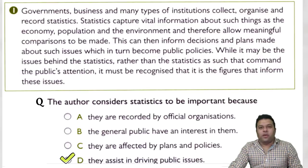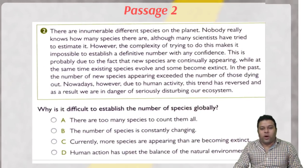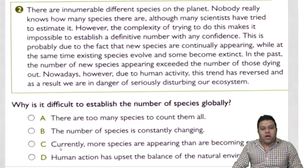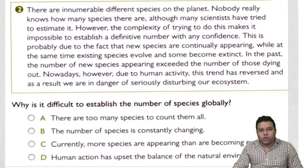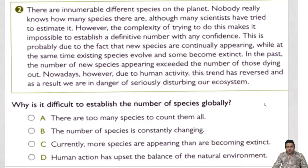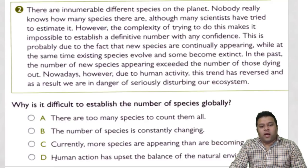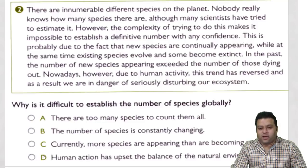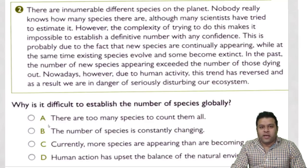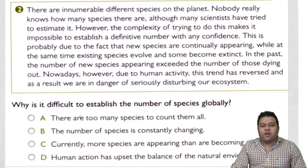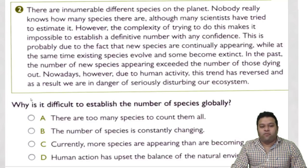Now look at this question: 'Why is it difficult to establish the number of species globally?' Pause the video and try to find the answer. I believe many of you chose B, C, or D. Most of you probably wouldn't choose A — the passage mentions innumerable species on the planet, but it doesn't say that's why it's difficult to find the number of species globally. This question is more about finding information.